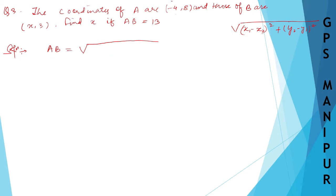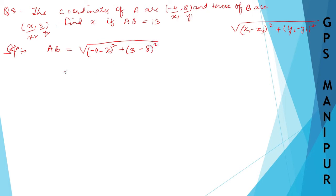Here x1 is -4, x2 is x, y1 is 8, and y2 is 3. Substituting: root over (-4 minus x) whole square plus (3 minus 8) whole square, which gives root over (-4 minus x) whole square plus (-5) whole square. AB is given as 13.